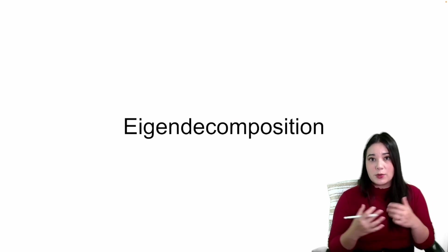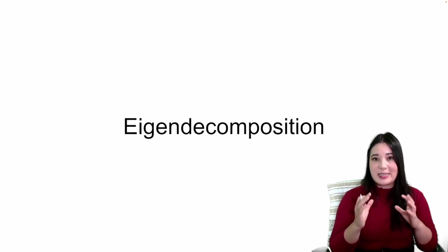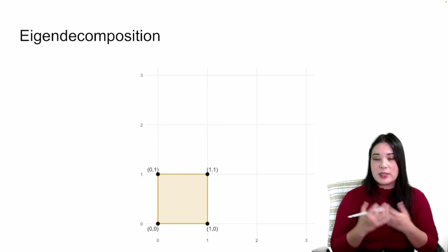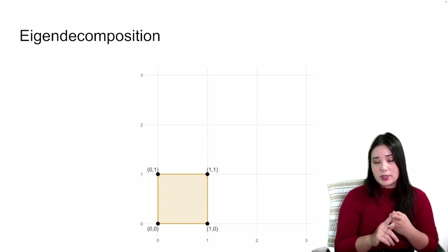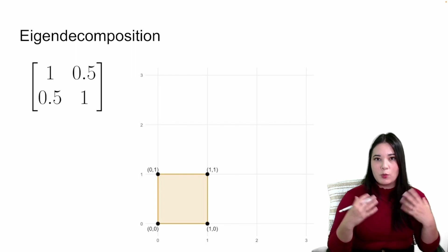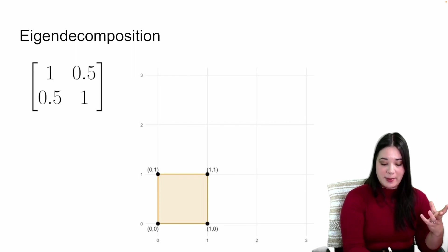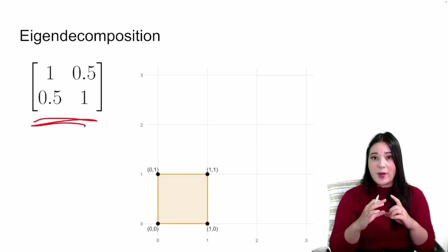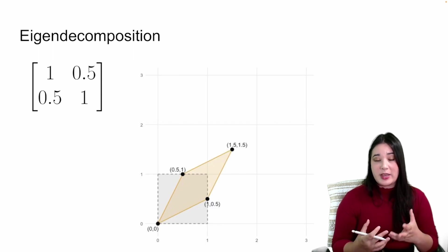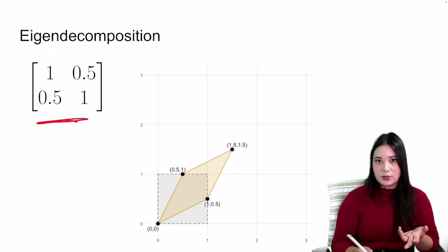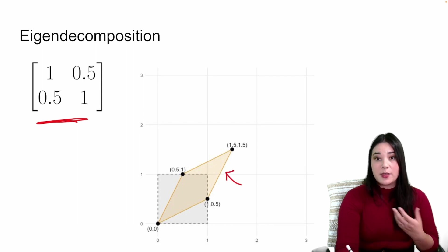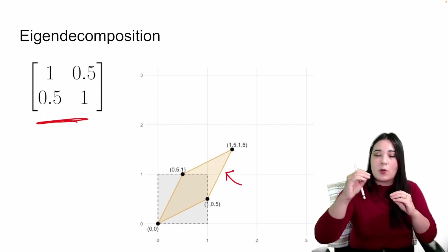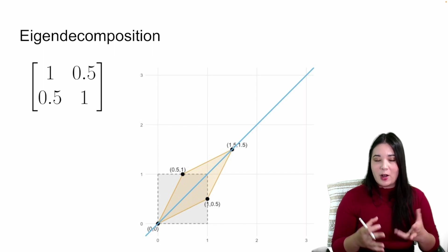We create those new variables using eigenvectors and eigenvalues. Eigen decomposition refers to taking a matrix and finding its eigenvalues and eigenvectors. Consider four points forming a square. When we multiply them by a matrix, that changes the location of those points — we go from the original square to a different shape. You can think of multiplying by a matrix as just taking that original square and stretching or squishing it in various directions.